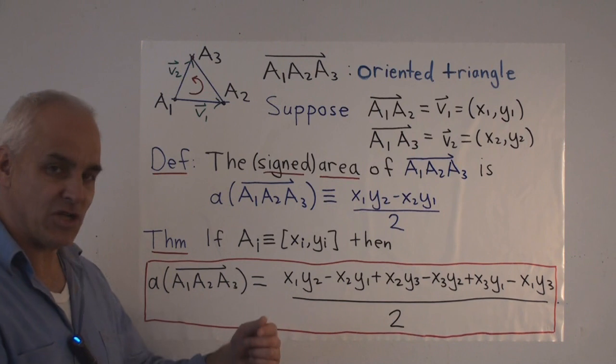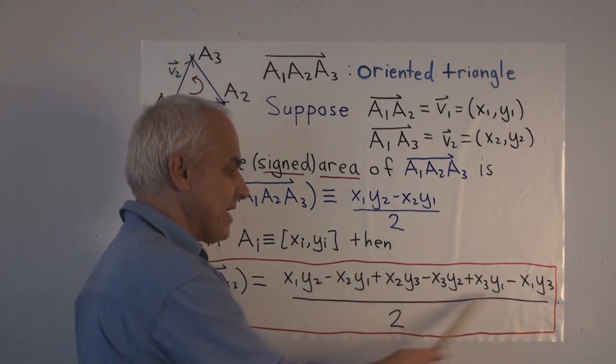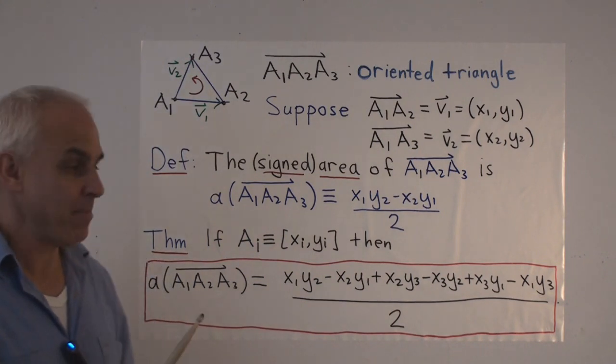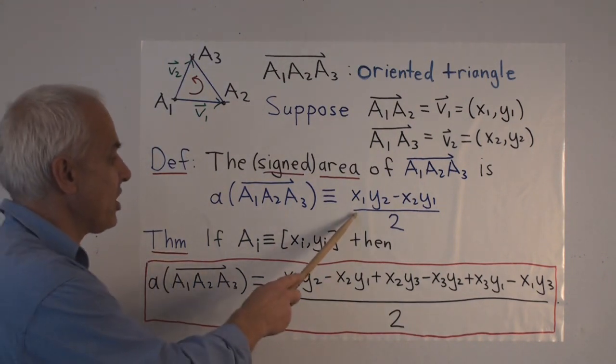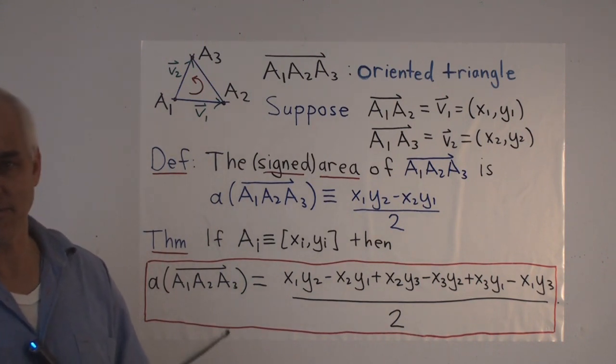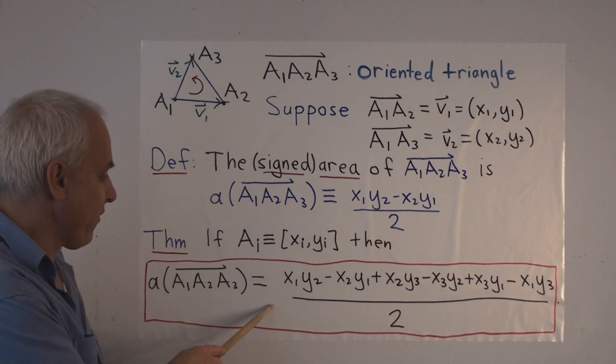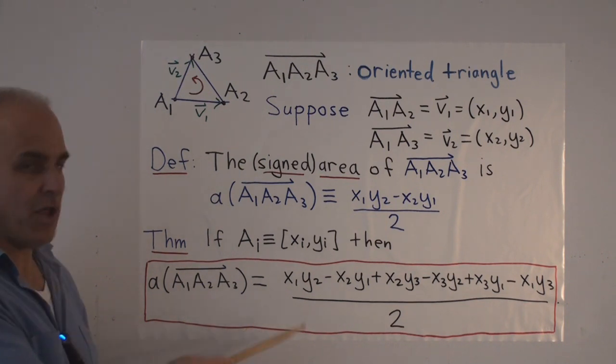So in other words, if you interchange 1 with 2 and 2 with 3 and 3 with 1, then the whole thing stays the same. That's telling us that this notion here is actually independent of which vector we started our definition from. So this is a very important formula, and we could have also started with this as the definition of the signed area.